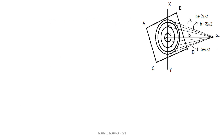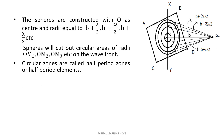ABCD is a wavefront and P is an external point at a distance B from the wavefront. The wavefront is divided into zones. Spheres are constructed with O as center and radii equal to B + λ/2, B + 2λ/2, B + 3λ/2 and so on. These spheres will cut out circular areas of radii OM1, OM2, OM3, etc. on the wavefront as shown in the figure.